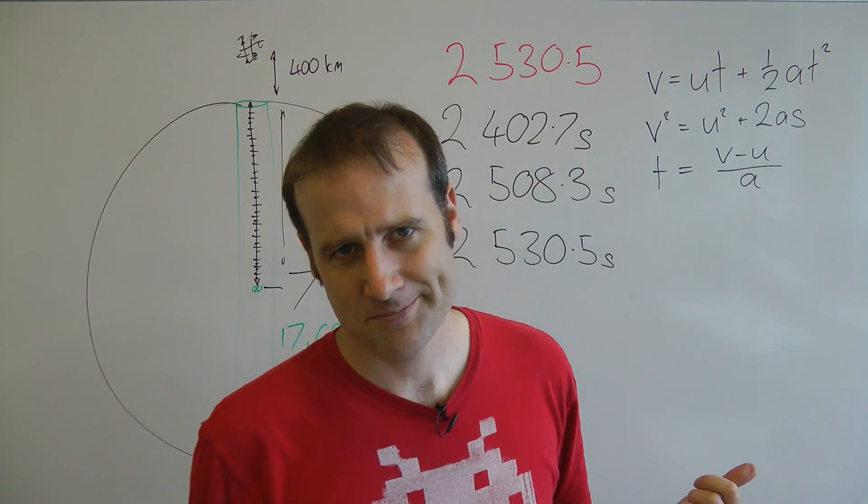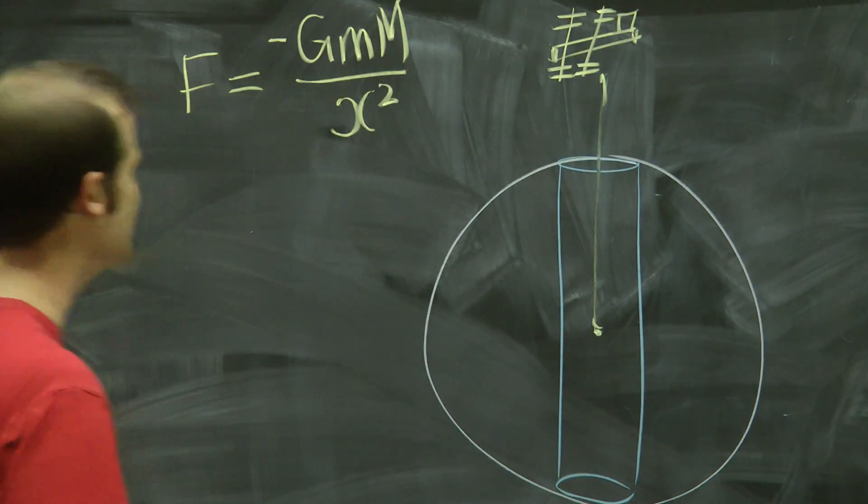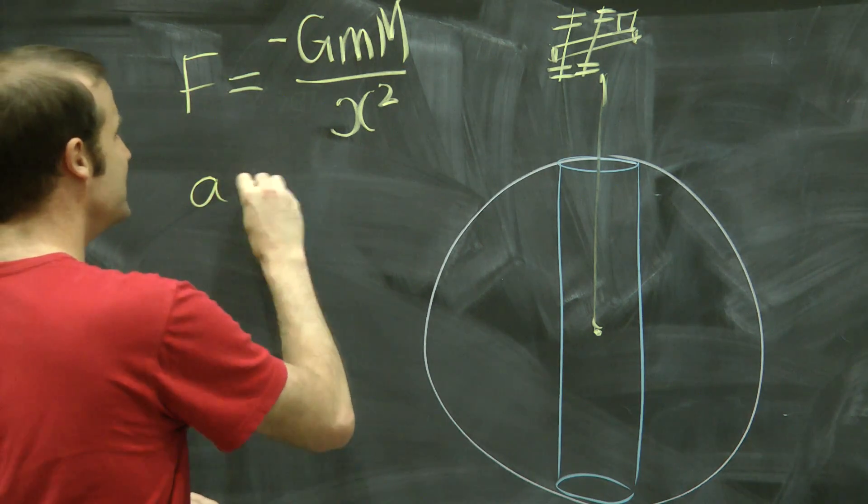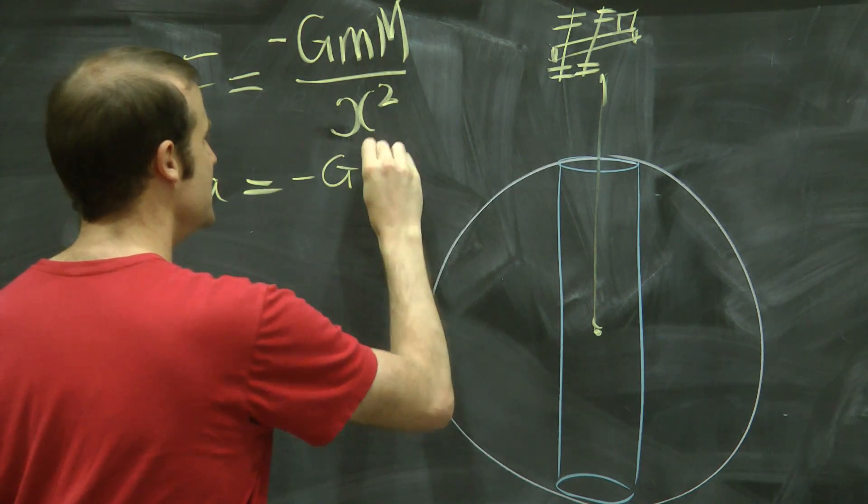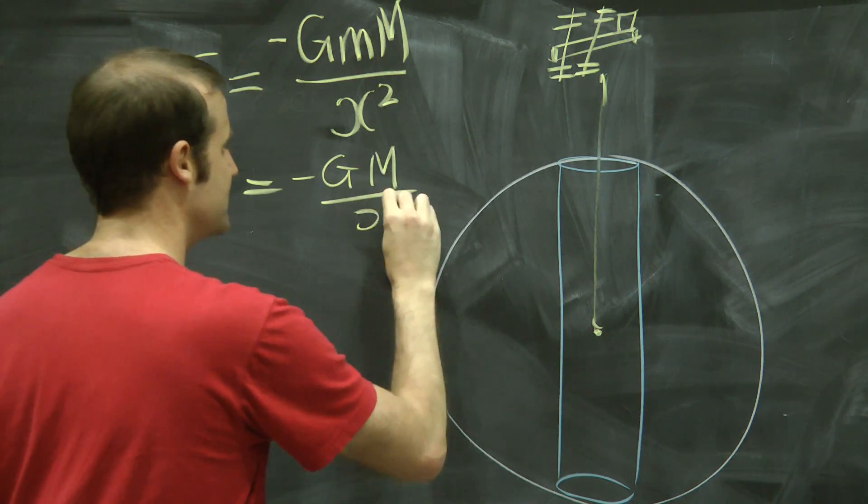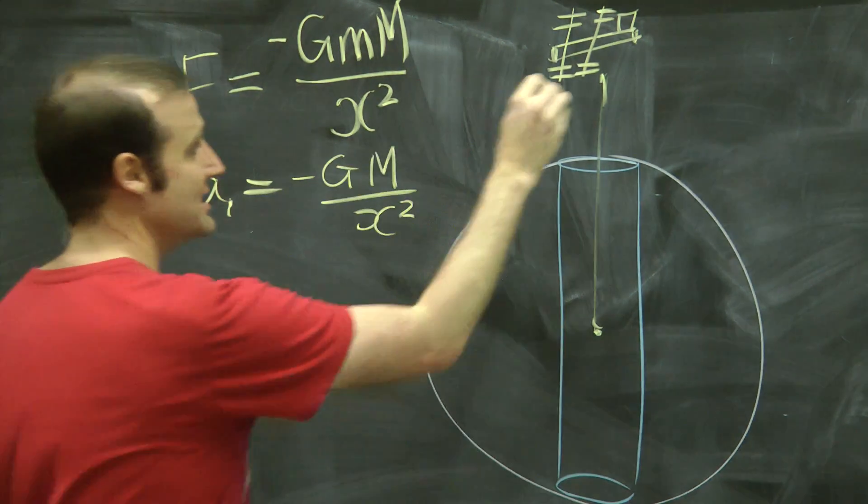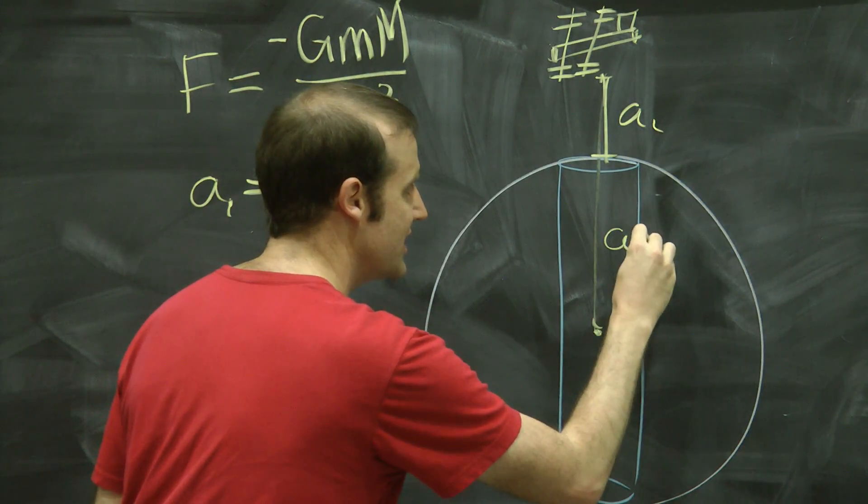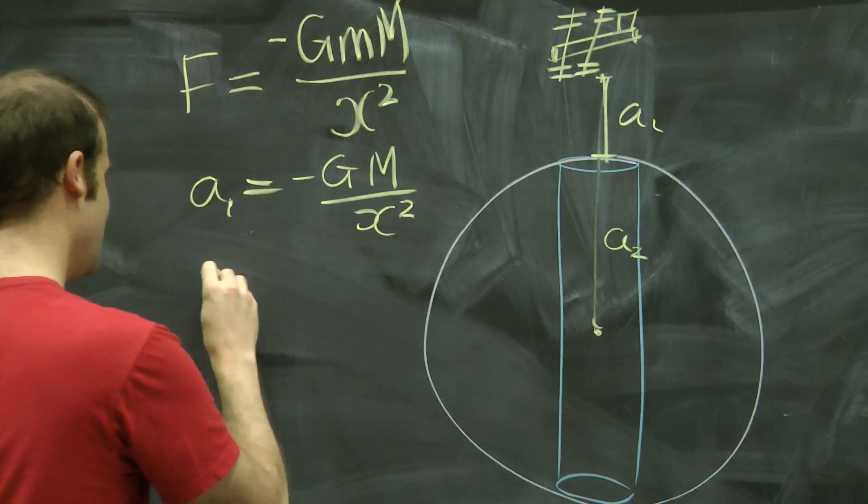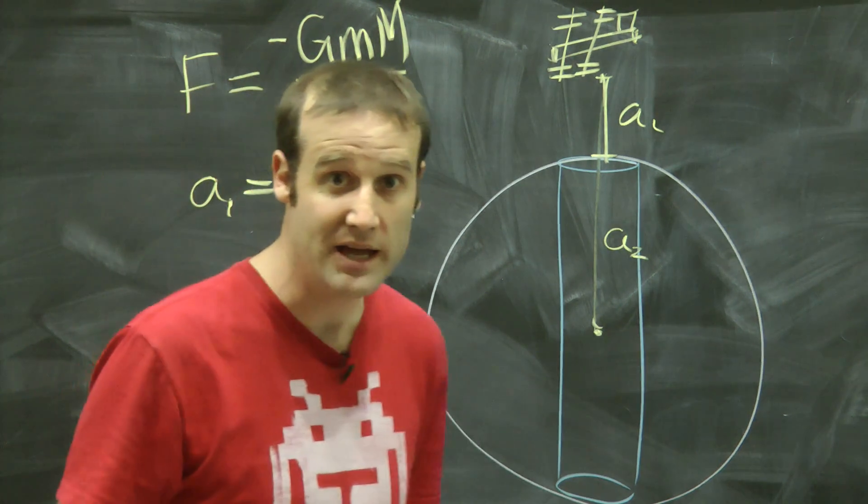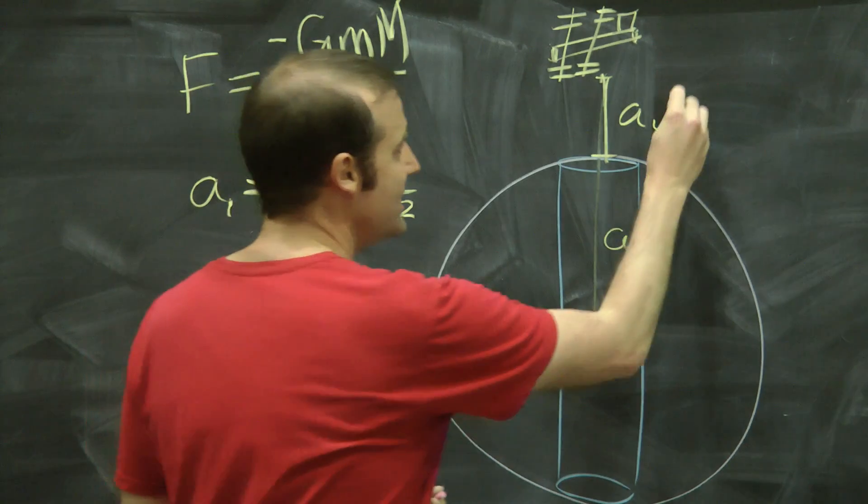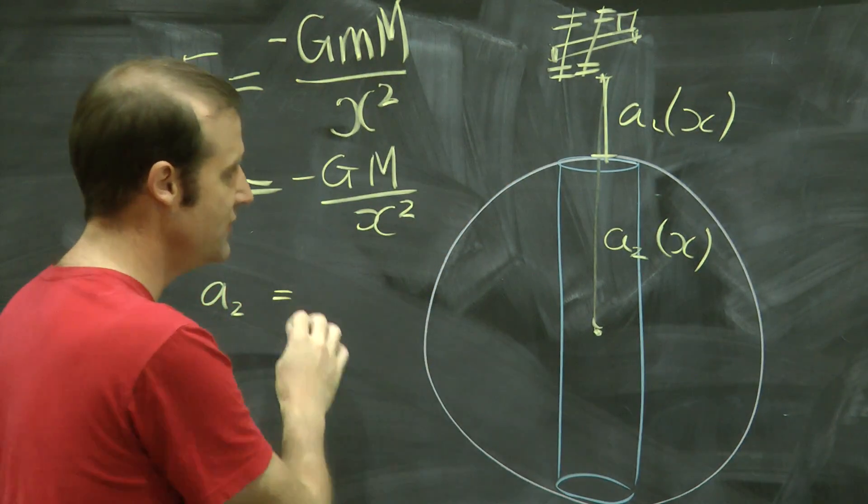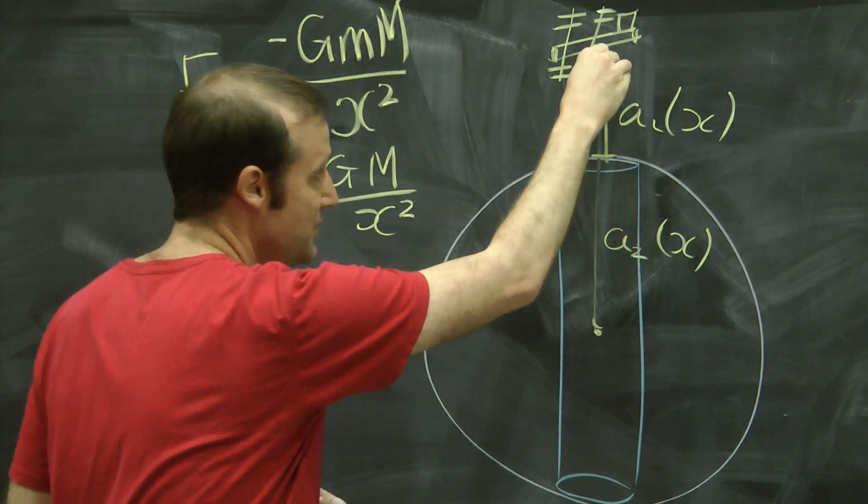But where's the fun in that? The fun is in doing it with integration. So we've got our force already. We can convert that into the acceleration simply by taking off the mass. So that's going to be negative g big M on x squared. I'm going to call that a1. That's the acceleration for this part of the fall. And then in here, you're going to have a2 and a2 equals the one that we had previously. And don't be fooled, these are both functions of x. So you've got acceleration 1 function of x, acceleration 2 function of x.